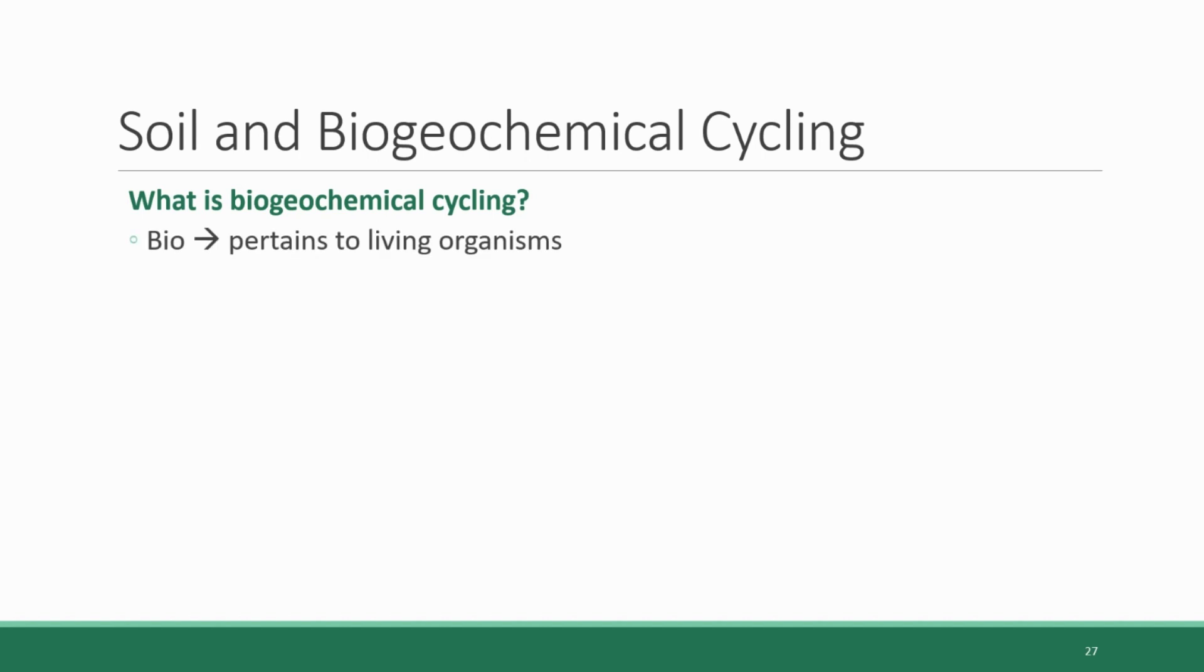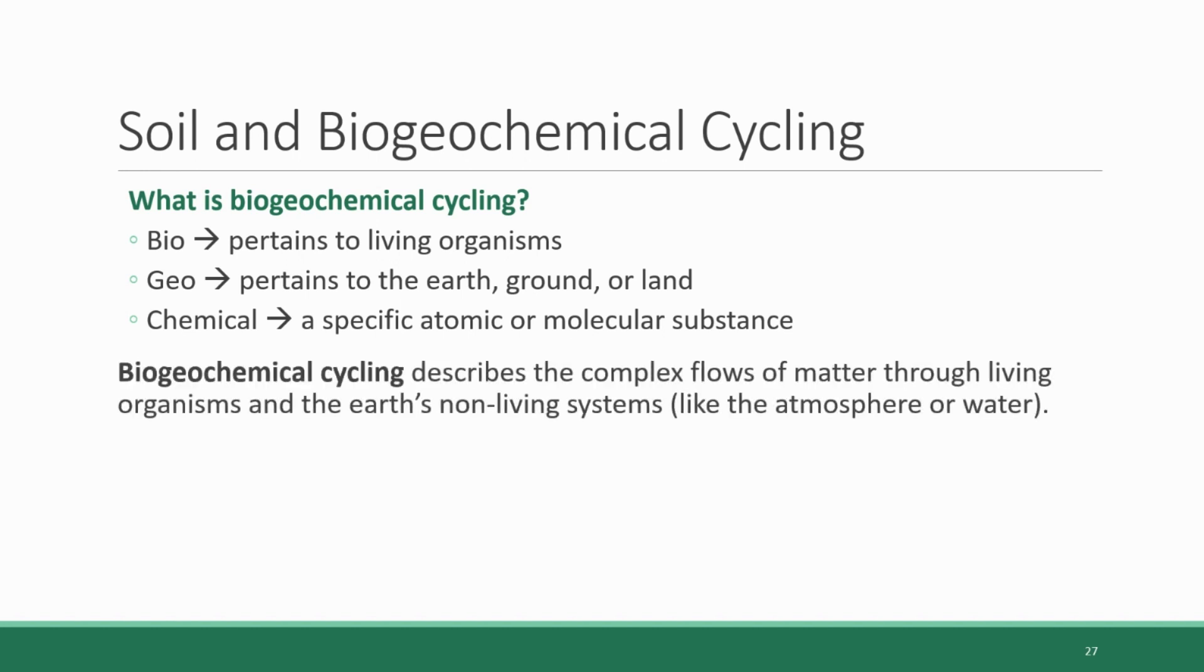Bio, as you probably know, means that these processes pertain to living organisms, while geo means earth, ground, or land, and chemical refers to a specific atomic or molecular substance. So taken together, biogeochemical cycling refers to the complex flow of matter through both living organisms and the Earth's non-living systems, like the atmosphere and water.